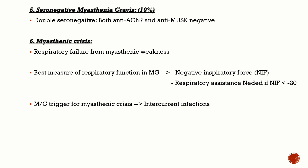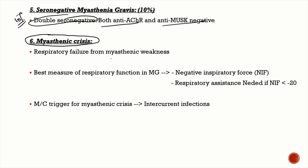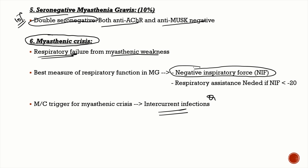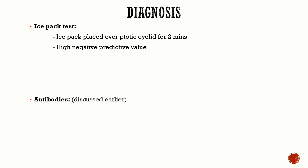Seronegative MG refers to patients negative for both anti-AChR and anti-MuSK antibodies — called double seronegative, seen in about 10% of patients. Myasthenic crisis is defined as myasthenic weakness causing respiratory failure requiring mechanical ventilatory support. The most common trigger is infection. The best measure of respiratory function is negative inspiratory force (NIF); when NIF is less than minus 20, the patient may require mechanical ventilation.